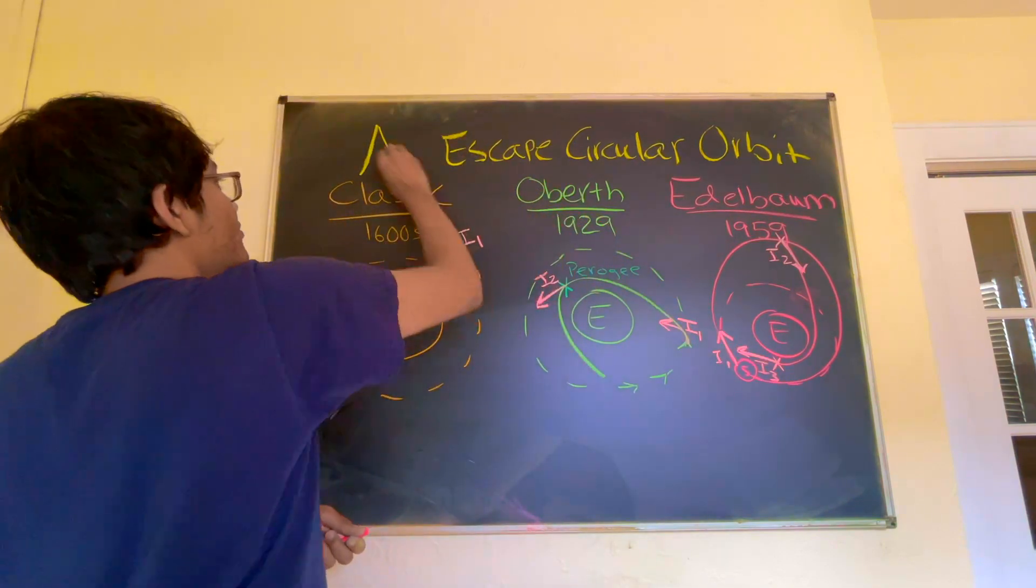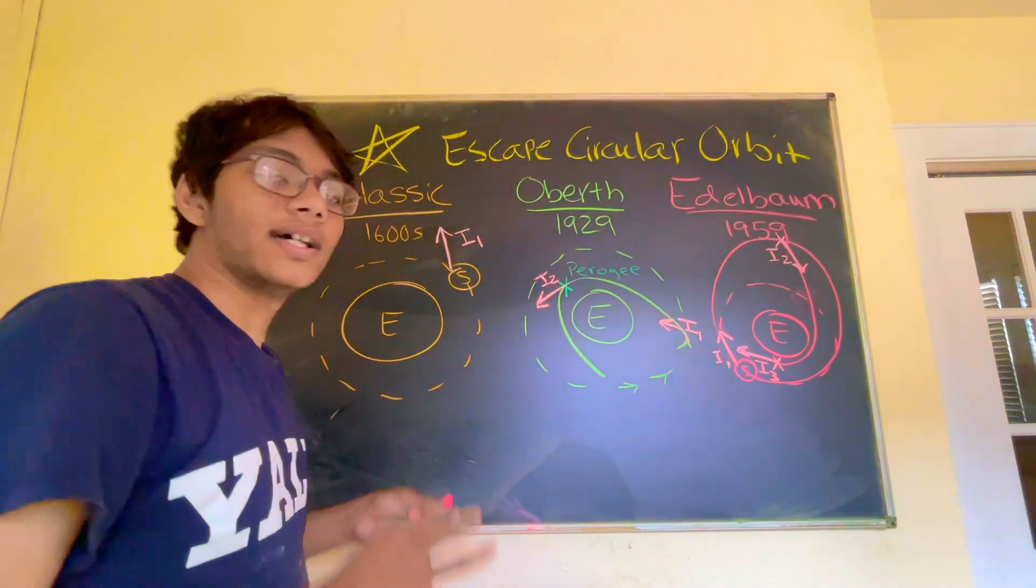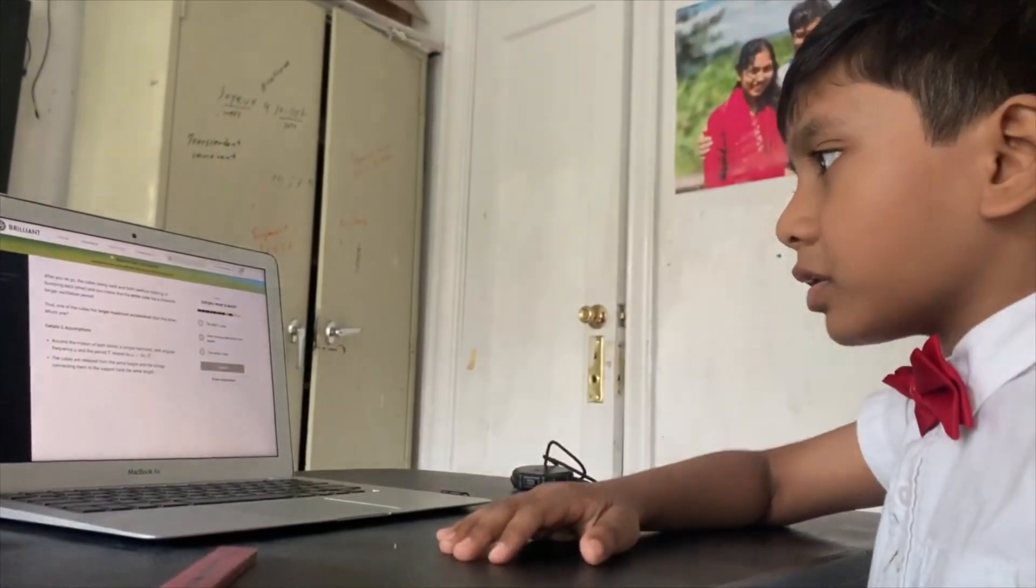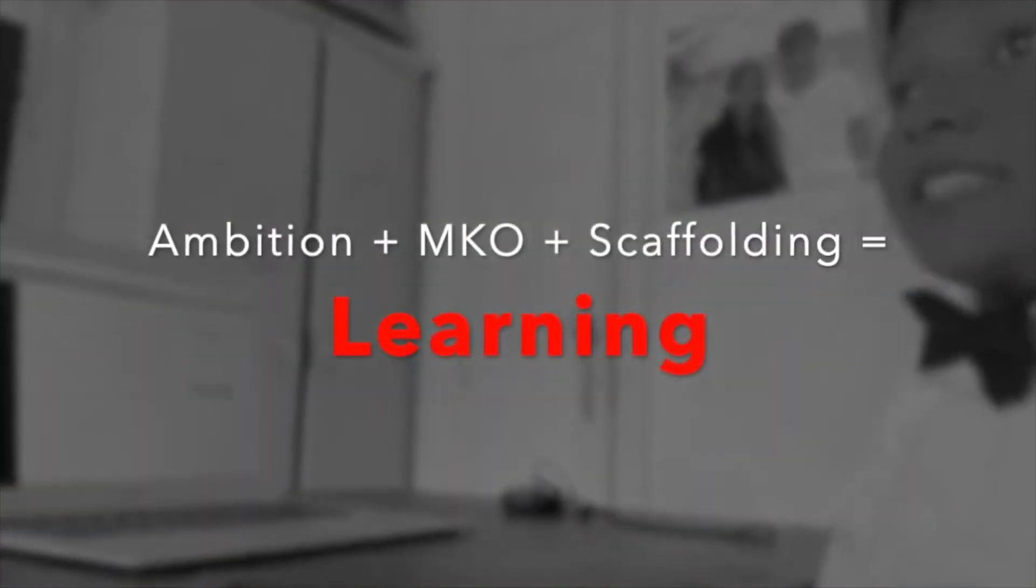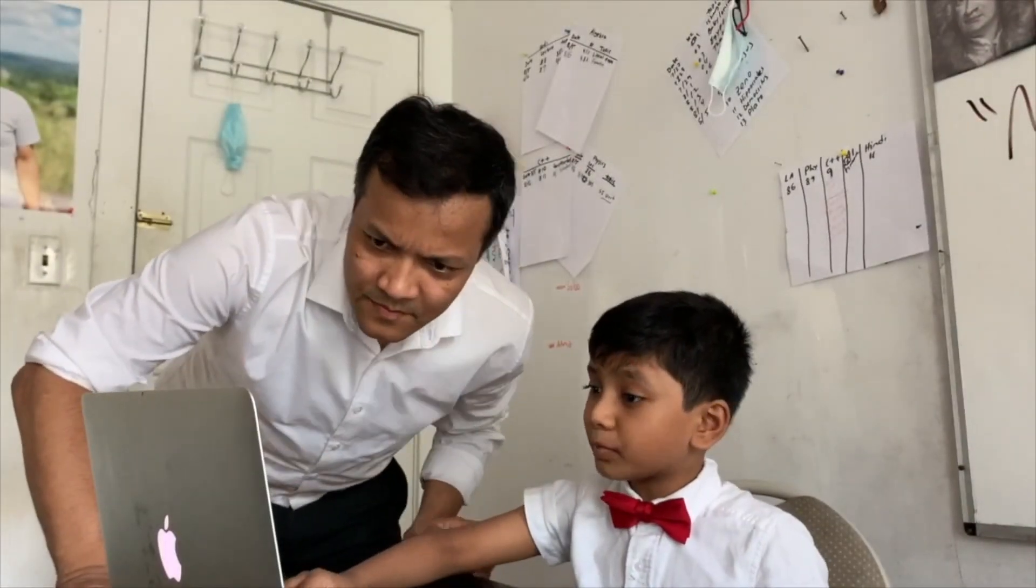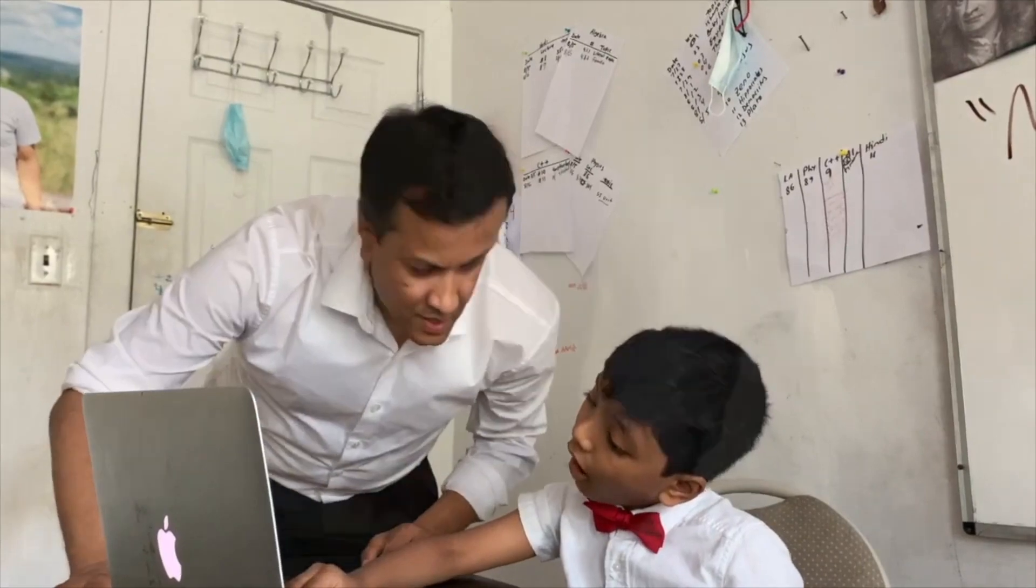Let's escape a circular orbit. These are the three methods for escaping a circular orbit. And hopefully you enjoyed this video. The ambition plus MKO plus scaffolding equals learning. We believe anyone can learn anything. That's why our motto is memorization is a crime.